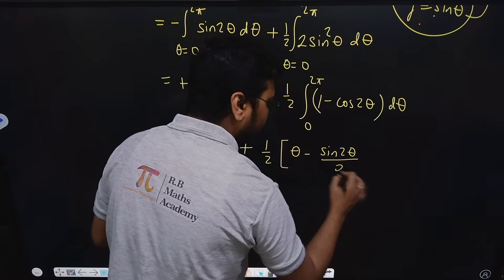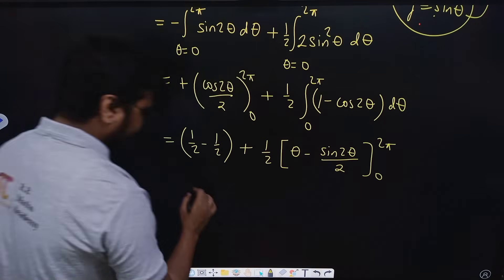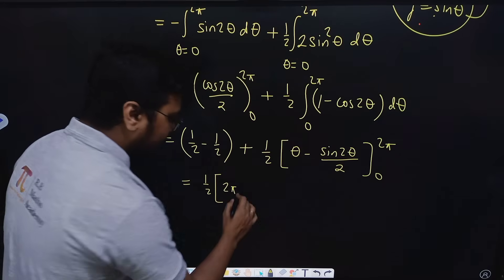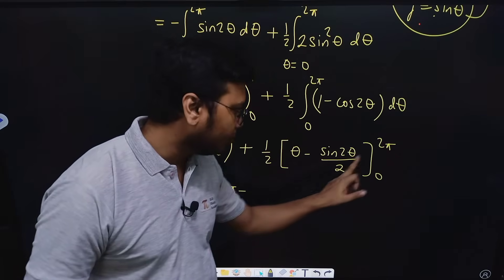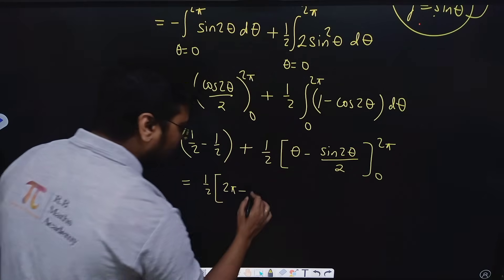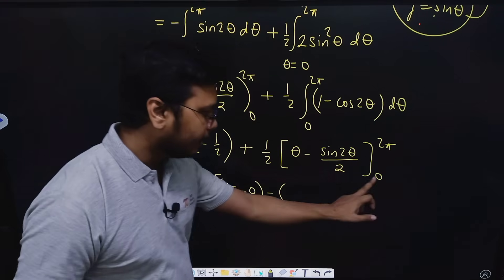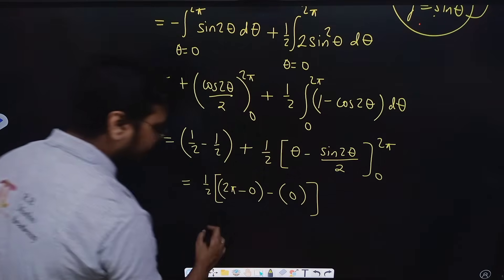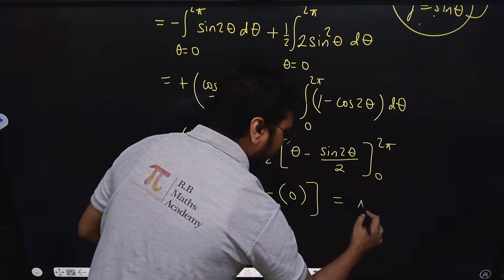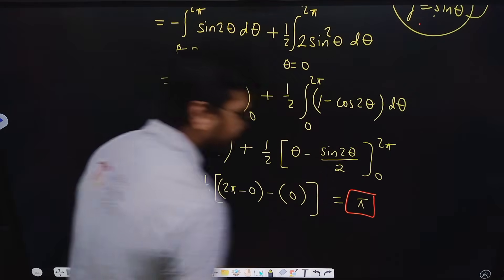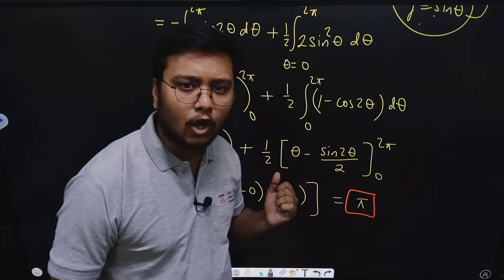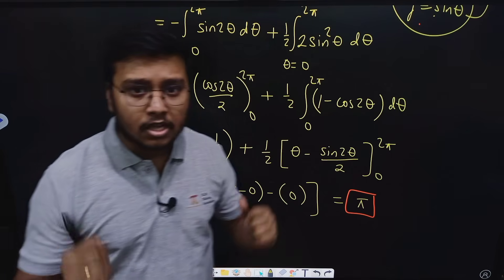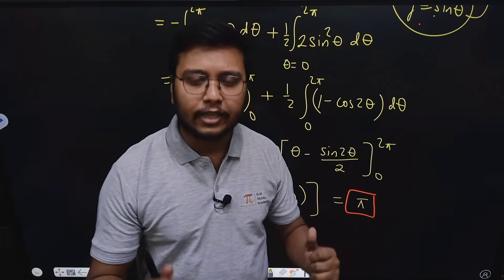For the second integral, ∫₀²π sin²θ dθ = ½ ∫₀²π (1 − cos2θ) dθ = ½ [θ − sin2θ/2] from 0 to 2π = ½(2π − 0) = π. So the total line integral equals 0 + π = π, which matches the right-hand side. Hence Stokes theorem has been verified. I hope this video is helpful — thank you, keep watching.